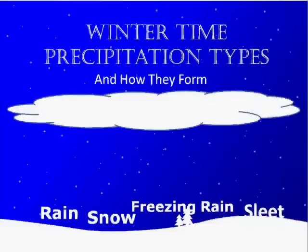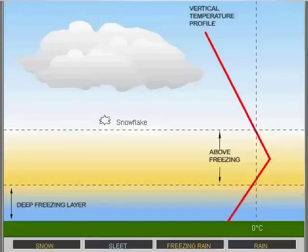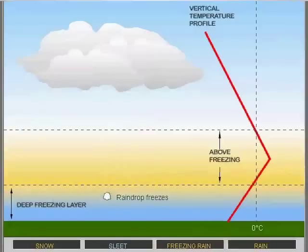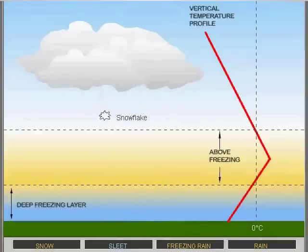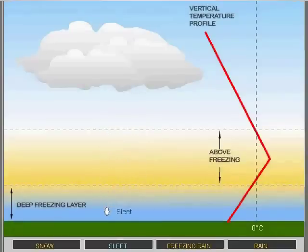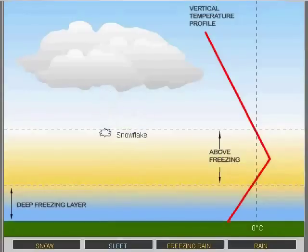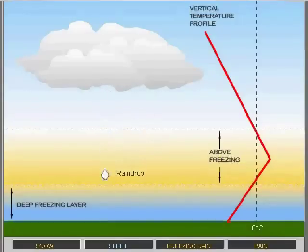Finally, we have sleet, which occurs when ice crystals that start as snow in the freezing part of the atmosphere encounter a layer of air which is warmer than freezing. When the ice crystal meets up with warmer air, it will melt into a raindrop. If the newly melted raindrop encounters a fairly deep layer of freezing air near the surface, the drop will refreeze back into an ice pellet. The main difference between snow and sleet is that snow has a crystalline type structure while sleet takes on a more solid pellet-like structure. Sleet will also usually bounce when hitting the pavement while snow will either stick to the ground or melt instantly.